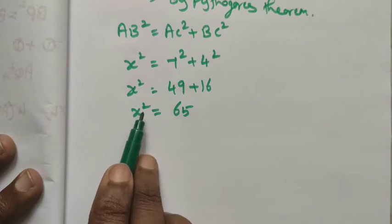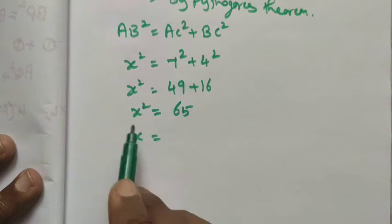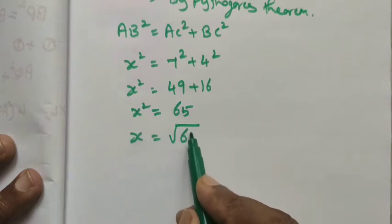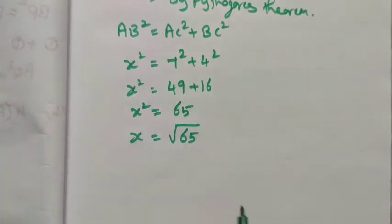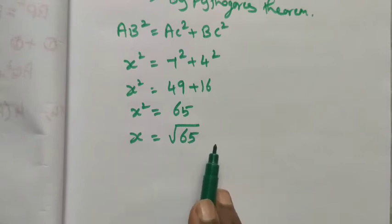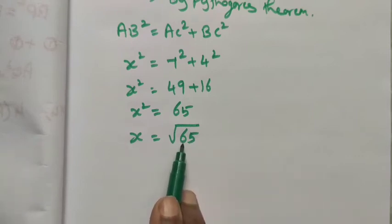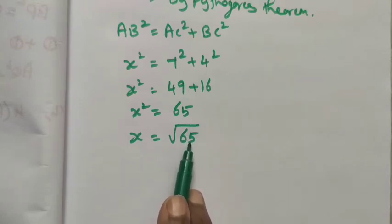We want to find the value of x, so taking square root on both sides we get x equals √65. √65 lies between 8 and 9 because 8²=64, so √65 is more than 8.